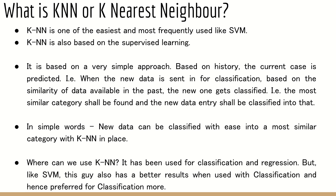When you get a new data entry, it will be compared with the available data for similarity. Wherever it has more similarity, it will be grouped there. The new data can be classified with ease into the most similar category with KNN. For example, if I get a new fruit that looks mostly like an apple, and I have mangoes and oranges also available, I will group this new fruit into apple because it is more similar to apple. That's KNN's approach.